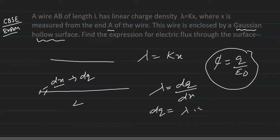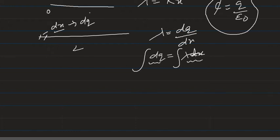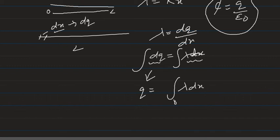So dq is equal to lambda dx. This dq is the charge in that dx length, but we need to find the total charge, so we integrate within proper limits. The wire is of length L, going from zero to capital L. Integrating dq gives Q, and we integrate lambda dx from zero to capital L.